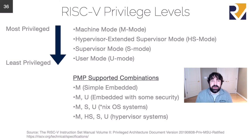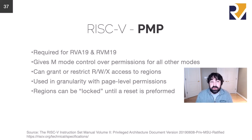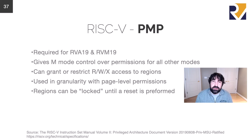Speaking about what PMP can do: first, it's required for RVA and RVM implementations — if you're implementing a RISC-V core, PMP is mandatory. It gives machine mode control over permissions for all other modes and can grant or restrict read, write, and execute access to separate regions of memory. It works at page-level granularity, which is usually configurable based on the system. Regions can also be locked until a reset is performed, and those locks can even lock out machine mode itself until a physical reset is done.